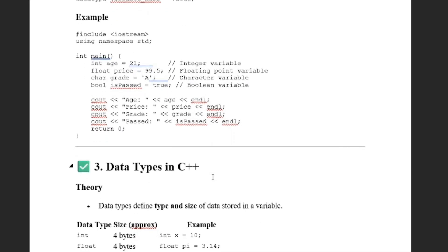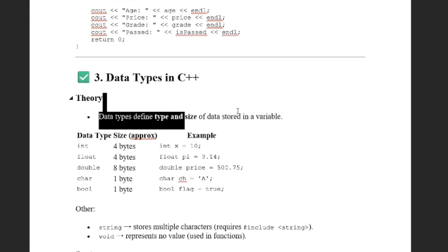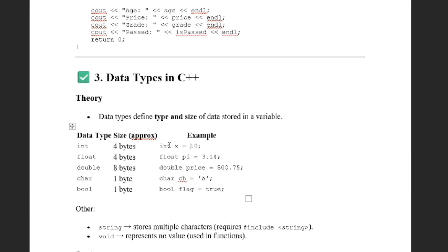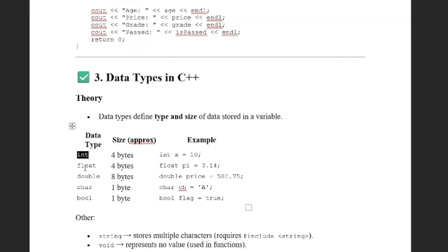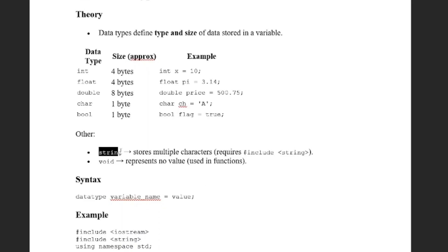Now let's come to data types. A data type basically defines the type and size of data stored in a variable. For example, if a variable x contains 10, we need to declare it as an integer type. Integer has four bytes. Float also has four bytes. Double is basically double the size of float, so it contains eight bytes. Then there is char, and bool — bool contains a Boolean value, true or false. Other data types include string and void.